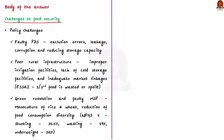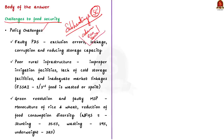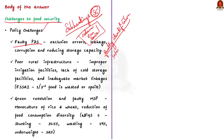To make your answer stand out, use subheadings. I will discuss challenges in ensuring food security under policy challenges, administrative challenges, economic challenges, and social challenges. Subheadings give structure and help generate points. Under policy challenges, mention India's faulty PDS system, which faces challenges like faulty identification of beneficiaries resulting in exclusion errors, leakage, corruption, and reduced storage capacity — so excess food production does not reach intended beneficiaries.